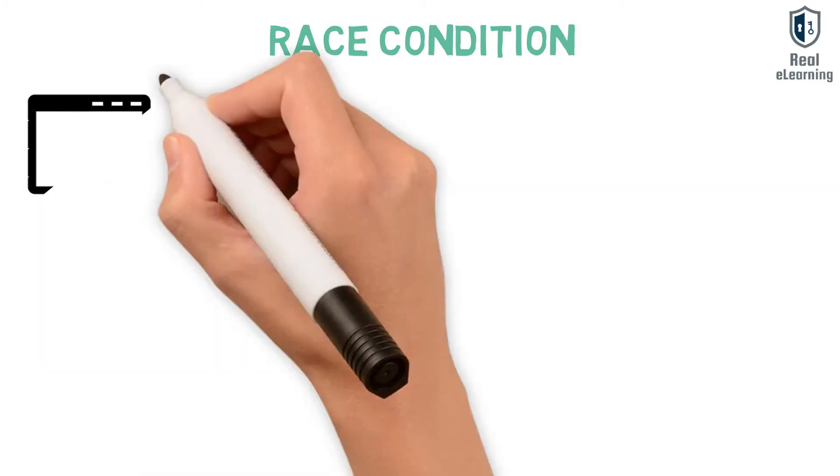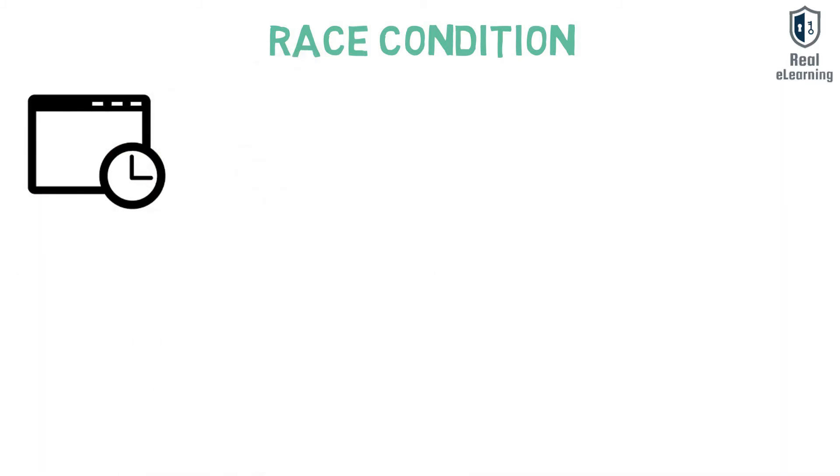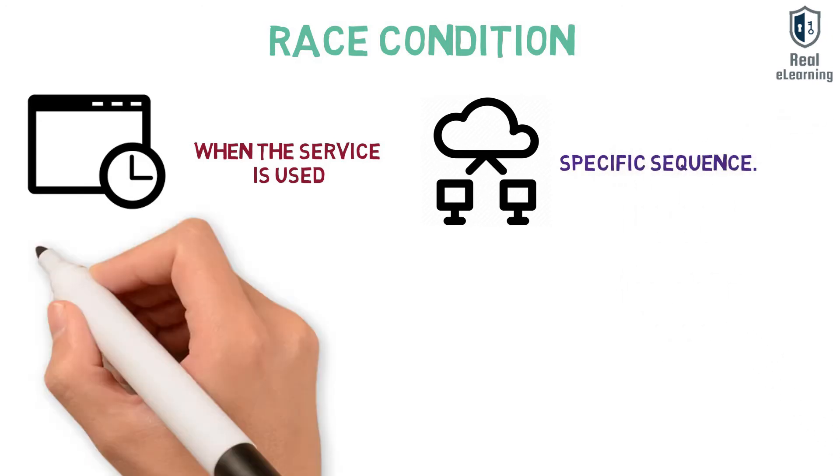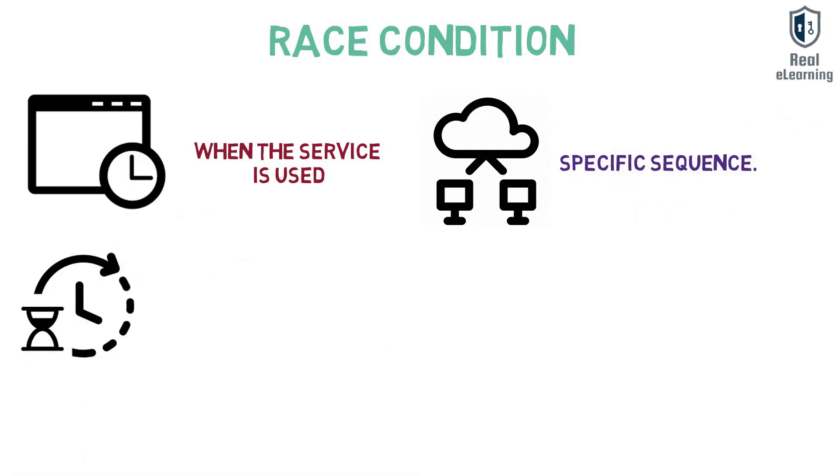A race condition, also called time of check to time of use attacks, exploits the small window of time between a security control being applied and when the service is used, and takes advantage of the need that computing systems must execute some tasks in a specific sequence. In any such sequence, there is a small period of time when the system has carried out the first task but not started on the second.